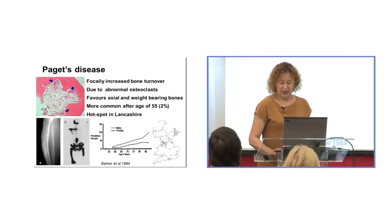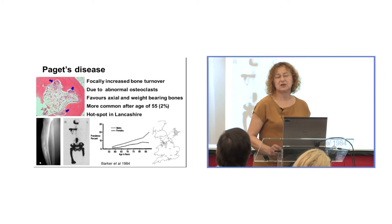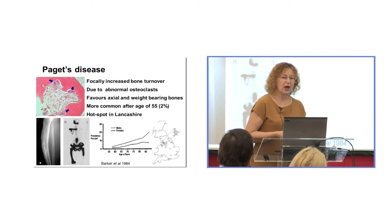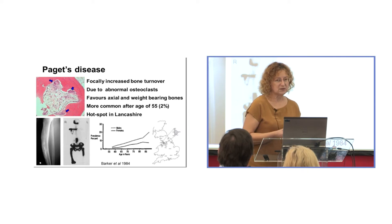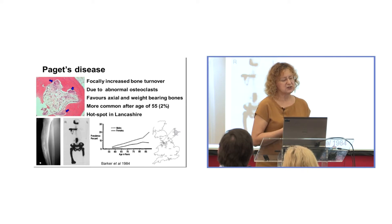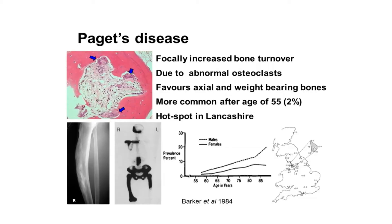Paget's disease favors long bones, weight-bearing bones, the spine and the pelvis, which suggests that mechanical loading may play a role in triggering this condition. It is more common after the age of 55, and certain areas are more affected — the prevalence in certain areas in the UK is higher, such as the northwest, especially the Lancashire region.